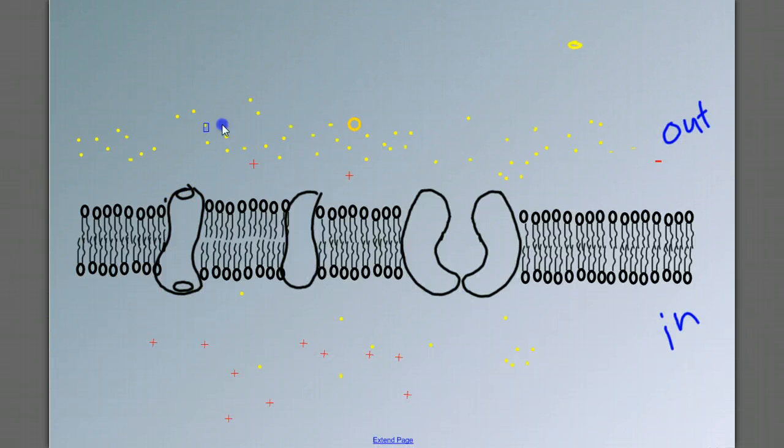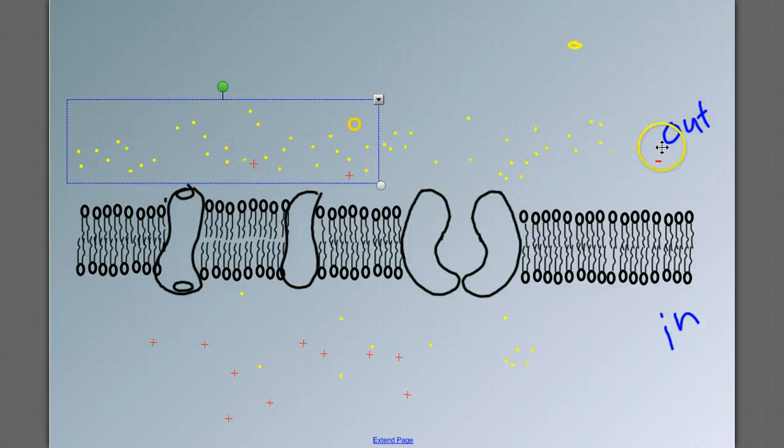So in this picture, when we look at these yellow dots, whatever they may be, whatever molecule these represent, we see that outside of this cell, there are a lot more of them than inside. So we have a higher concentration outside than in. So these yellow dots want to move which direction? Into the cell or out of the cell?